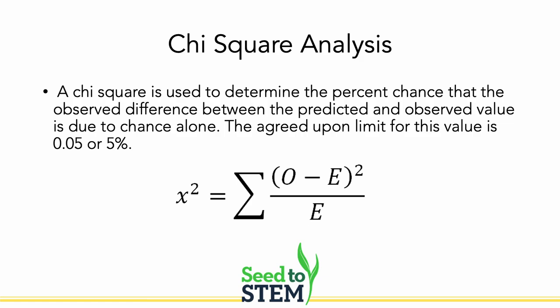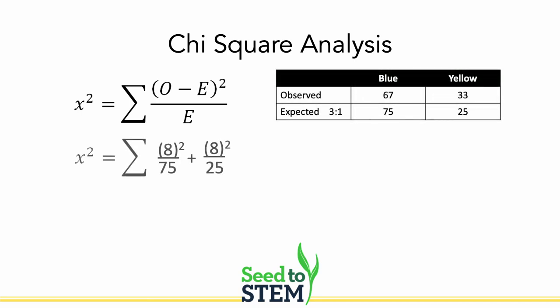So we perform a Chi-Square analysis. The formula uses the Sigma symbol meaning summation — you add up the calculation for all traits. For each trait, you take observed minus expected, square that on the numerator, and divide by the expected. We square the numerator because we could have a positive or negative difference — we just want to know how far off from expected. When we plug in the numbers, we're taking 67 minus 75, squaring it, getting 64 over 75, and for the other: 64 over 25.